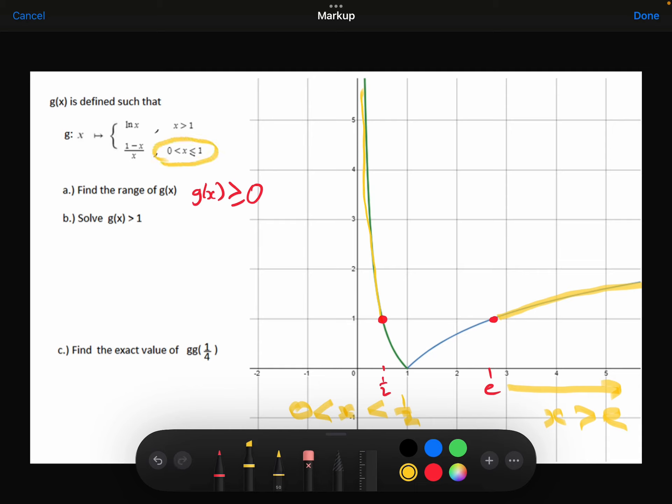So having a look, it's only defined down to 0. So that's where G of x is greater than 1.